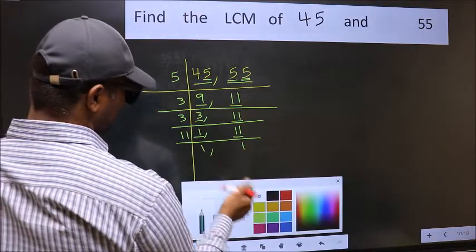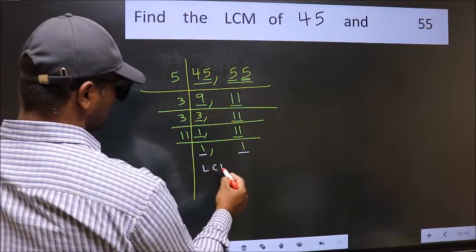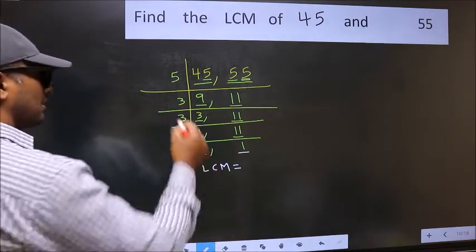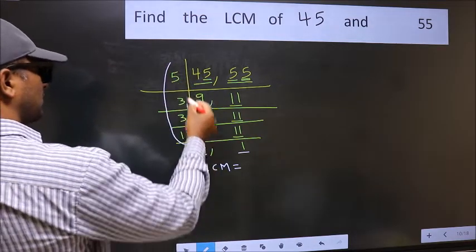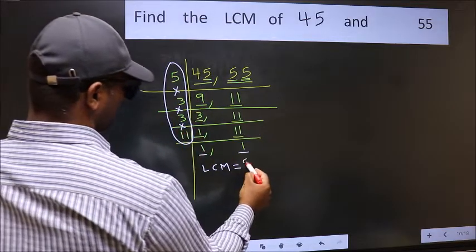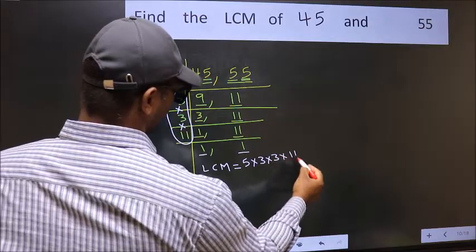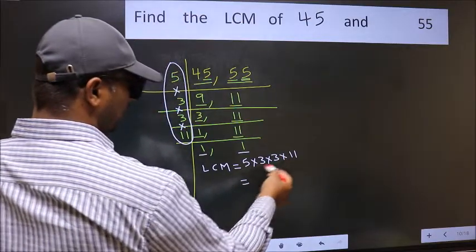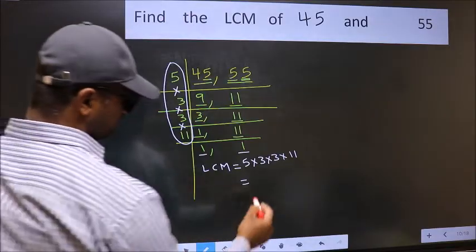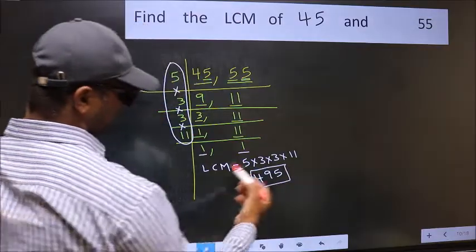So we got 1 in both places. Our LCM is the product of these numbers. That is 5 into 3, into 3, into 11. When we multiply these numbers, we get 495. So 495 is our LCM.